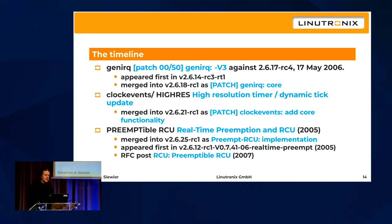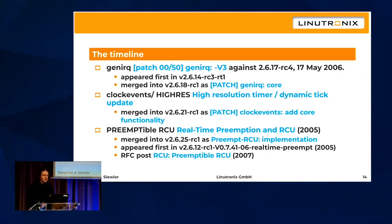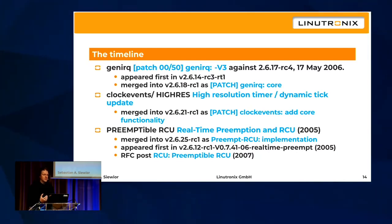Generic IRQ infrastructure was the next feature in RT, influenced by what Russell had in ARM. It was in RT since the early days to simplify threaded interrupts. Later we had clock events and clock source parts — you needed highly accurate timers, but also needed to read the clock source at high resolution for accurate wake-up times. Those two pieces belong together and were merged separately upstream.